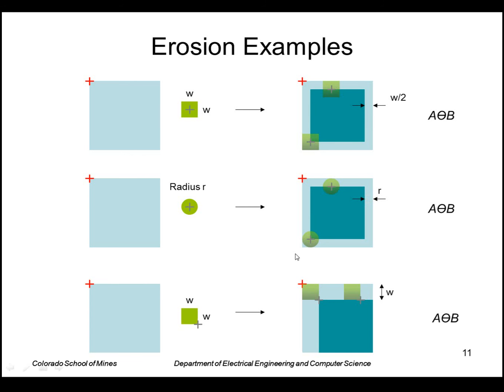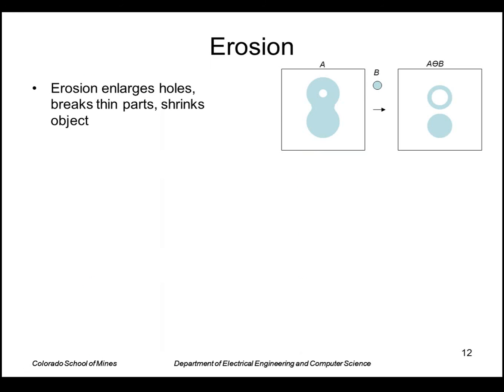If I take a structuring element that has the origin not in the center but say in the corner here, then this is the result of erosion of A by B. Remember that I have to output a one whenever the structuring element is completely inside A. So that's true at this location, but if I go any further outside there, it would not be true.